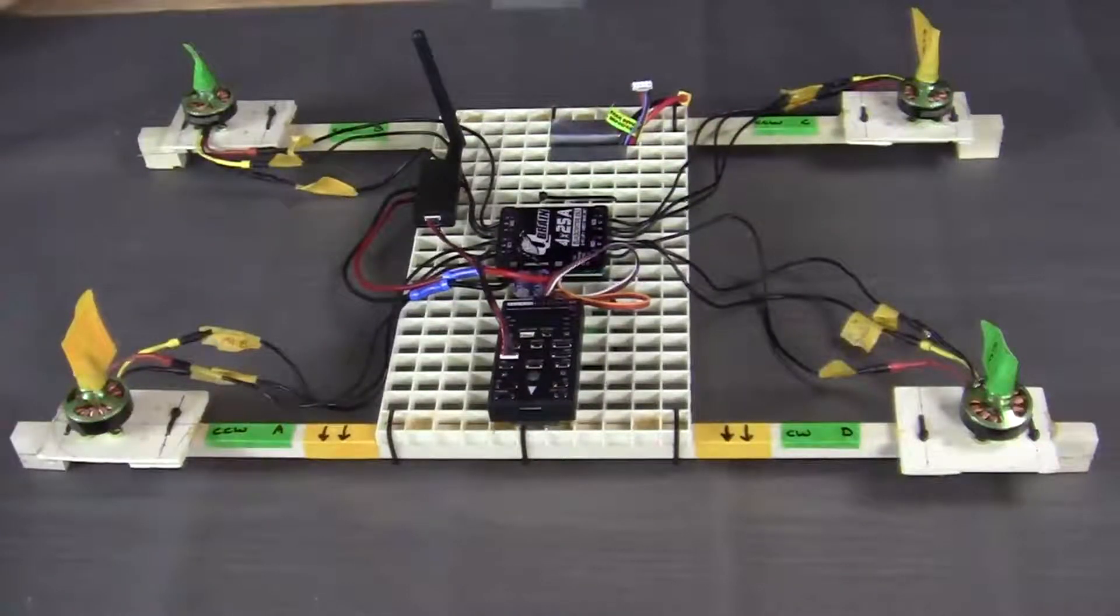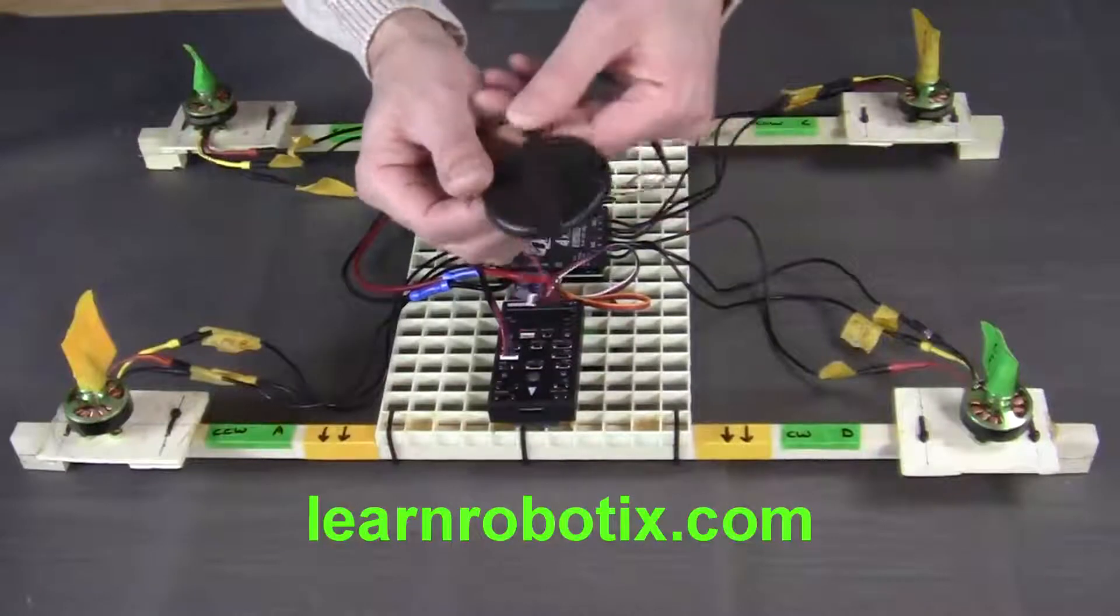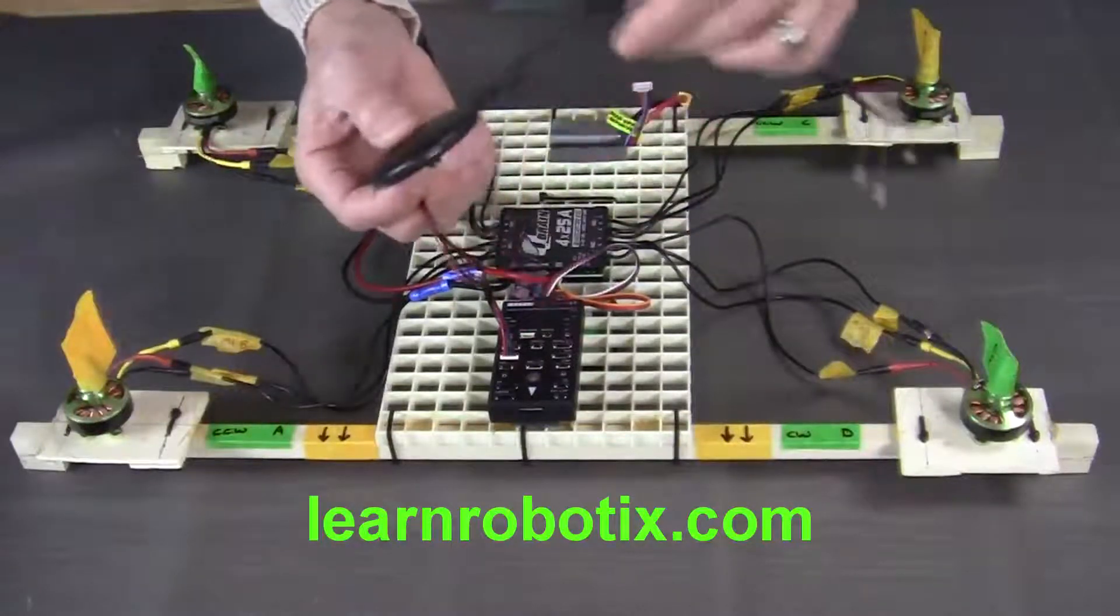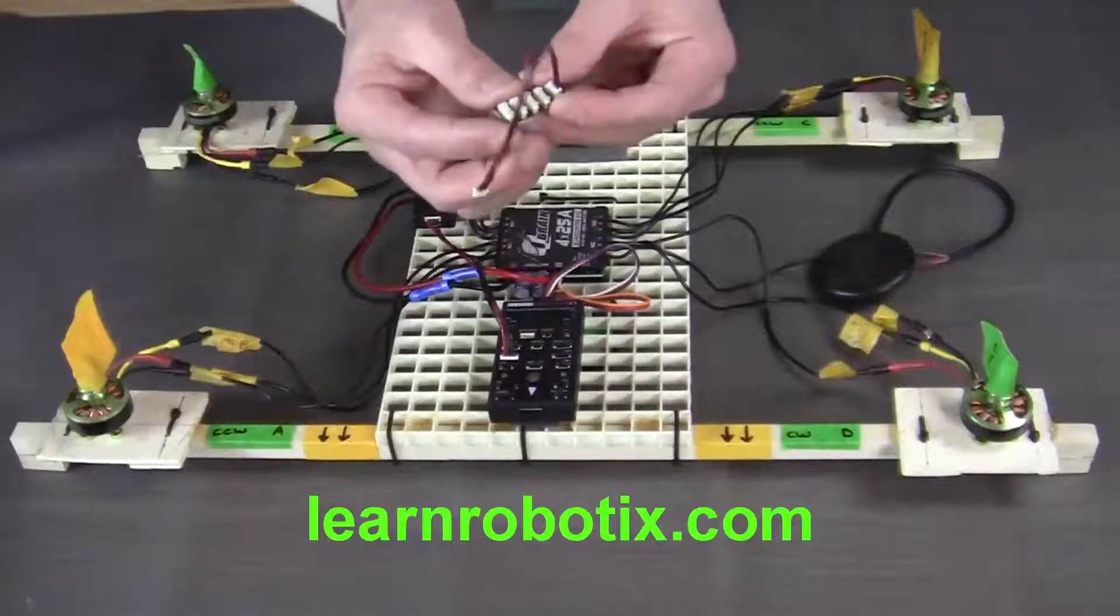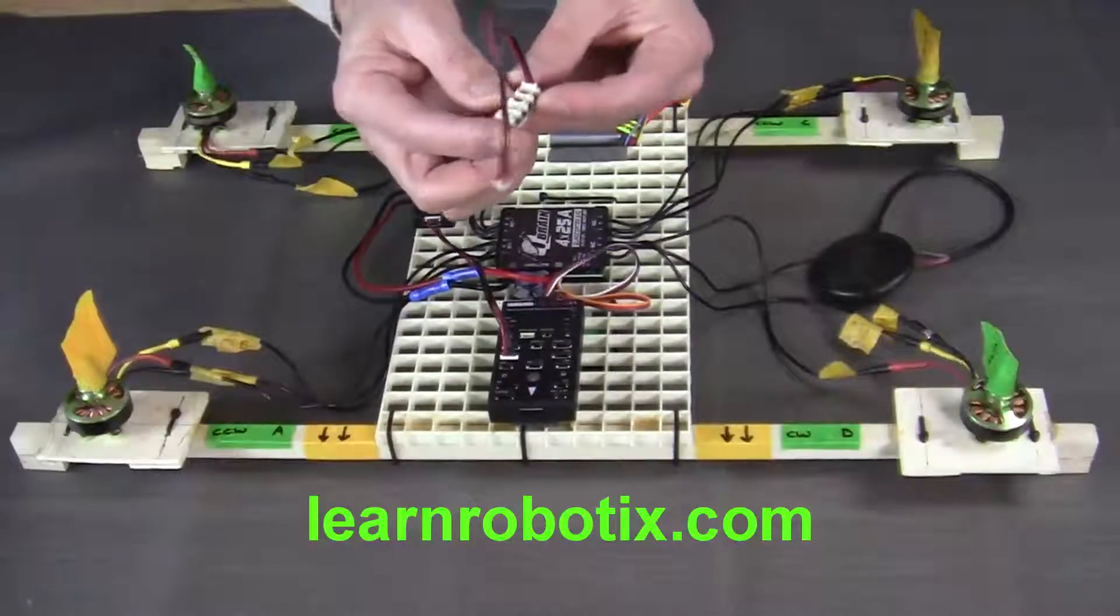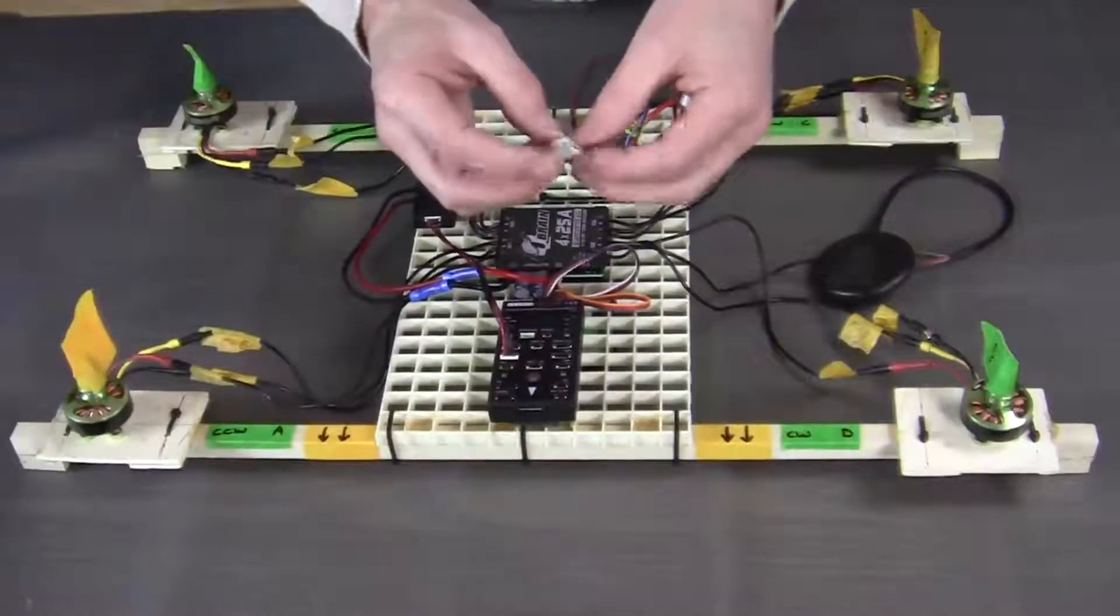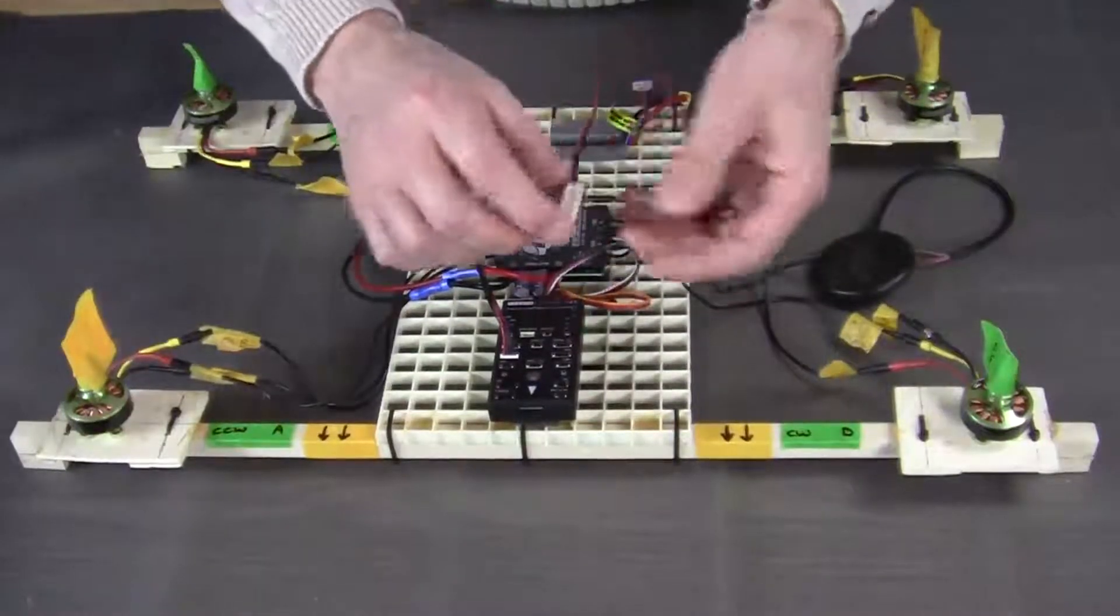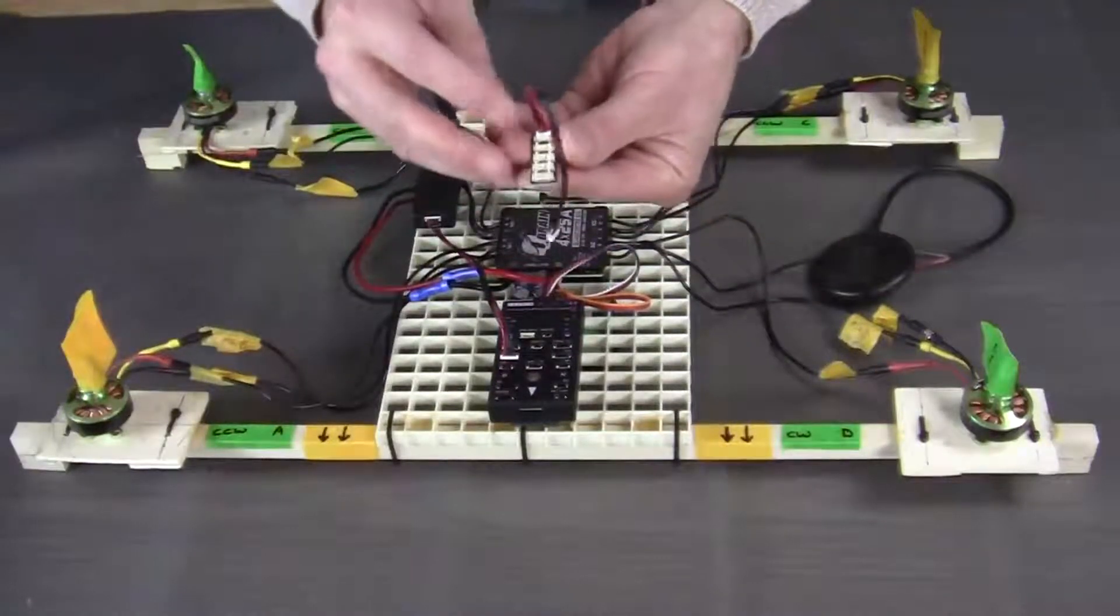Now the next component that we're going to connect to the PixHawk is going to be the GPS compass. But first what we're going to do is connect an I2C splitter to the PixHawk and then we'll connect the GPS to the splitter. Now what the splitter is going to do is provide power to the GPS,